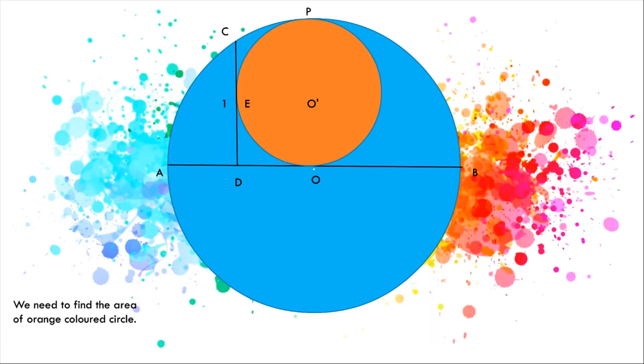The orange circle touches the diameter at point O and the blue circle at point P. CD is tangent to the orange circle and perpendicular to diameter AB, with length 1.